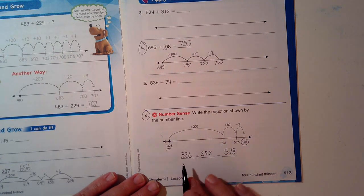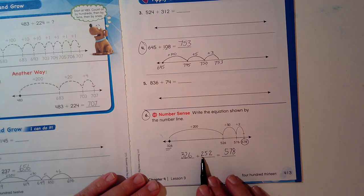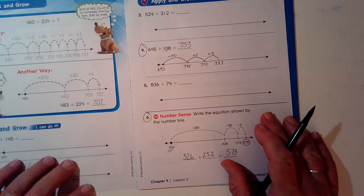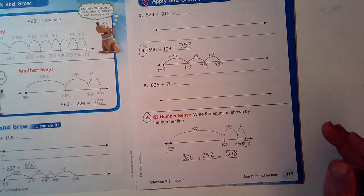326 plus 252 is 578. There you go. Alright. Hope you're having a great day. We'll talk to you tomorrow.